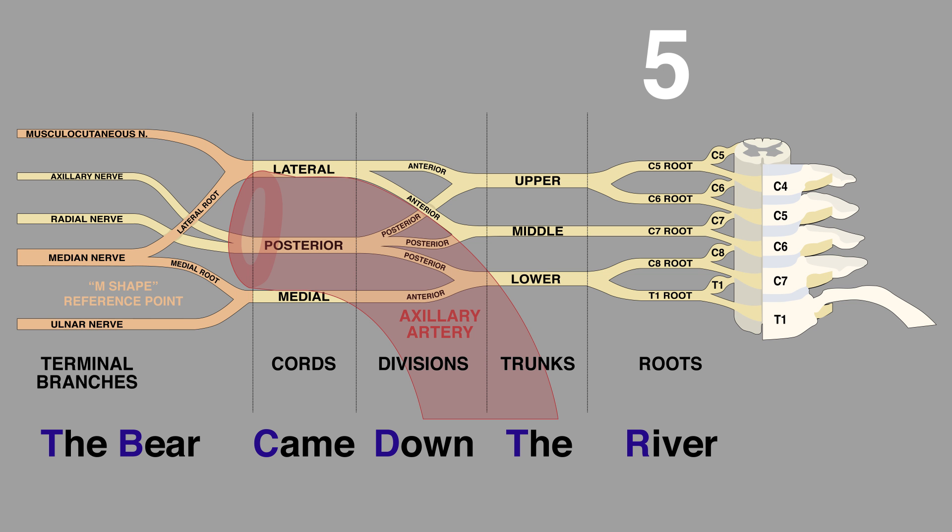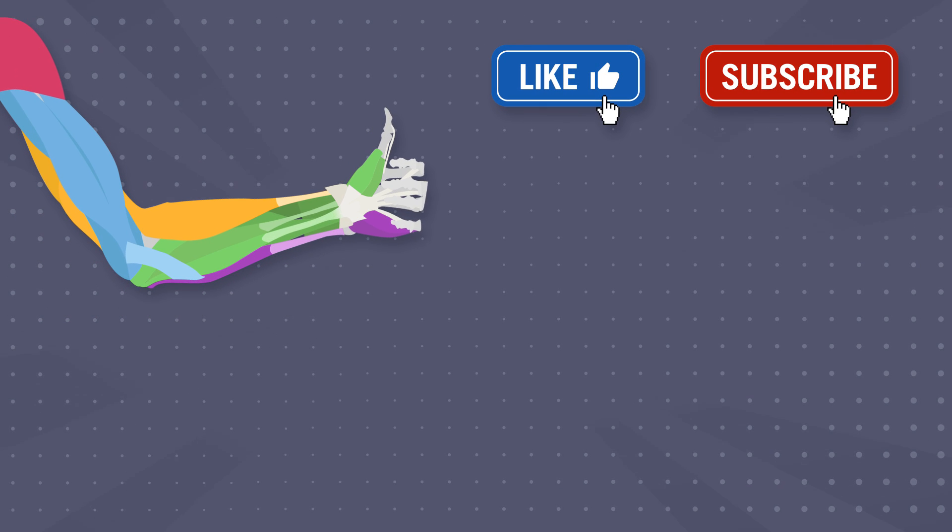In summary, there are 5 roots, 3 trunks, 6 divisions, 3 anterior and 3 posterior, 3 cords, and 5 branches.